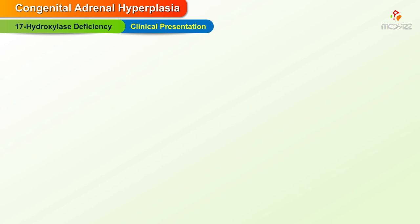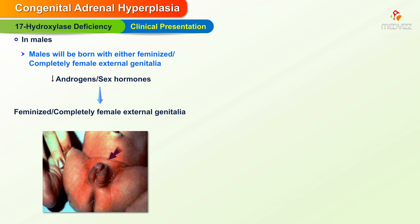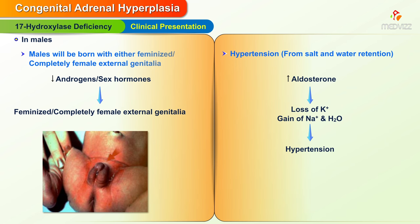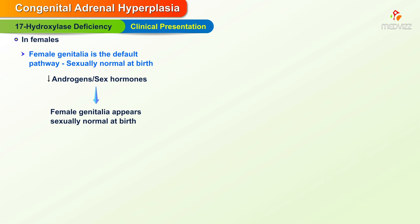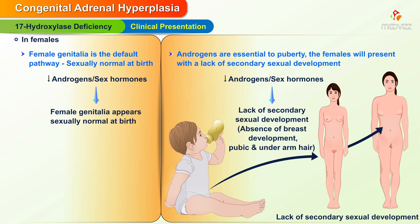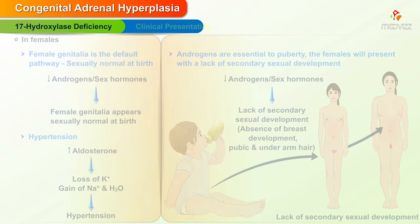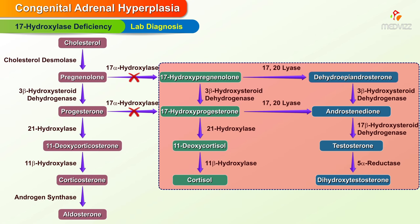Clinically, males will be born with either feminized or completely female external genitalia, and hypertension resulting from salt and water retention. In females, since the female genitalia is the default pathway, females will appear sexually normal at birth. However, since androgens are essential to puberty, females will present with a lack of secondary sexual development. Like the males, they will also have hypertension. Lab findings show increase in aldosterone, decrease in cortisol, and decrease in 17-ketosteroids, testosterone, and DHT.